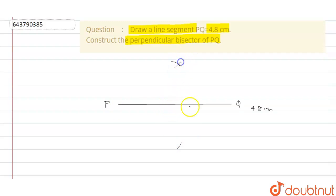That is this and this. We can name the intersection points: this is R or K and this is B. Now join AB. So AB is the perpendicular bisector of PQ.